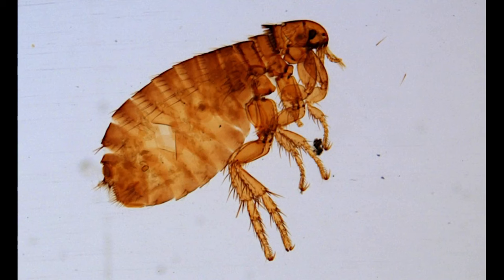Overall, the flea has a laterally compressed body, meaning that it's thin when you look at it from head on. Their slender bodies are adapted to enable them to slip between the hairs of their host as easily as possible. Like other insects, the flea has body segments roughly divided into the head, the thorax, and the abdomen.